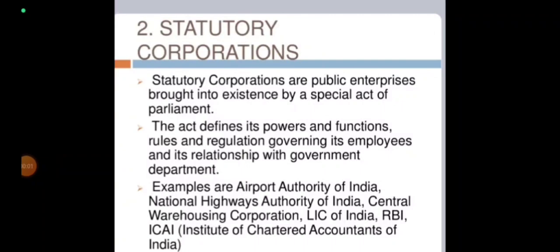Good morning class. In this video we are going to discuss the second form of government undertaking, that is a statutory corporation. Statutory corporations are public enterprises brought into existence by a special act of Parliament. These are corporations which are started by passing a special act in Parliament or state legislation. The act defines their powers, functions, rules, and regulations governing employees and their relationship with government departments.